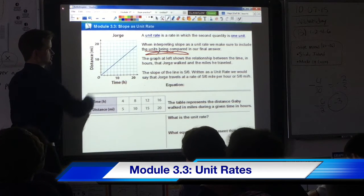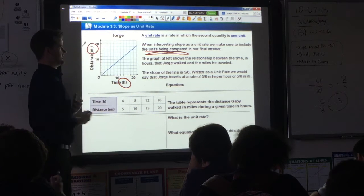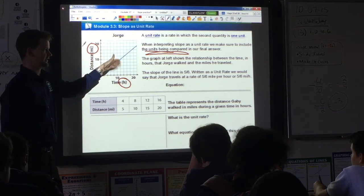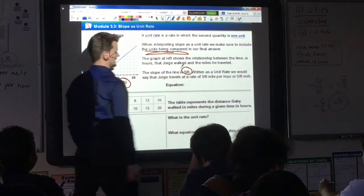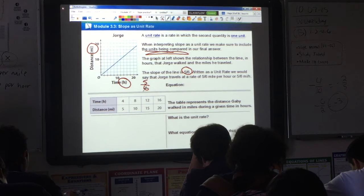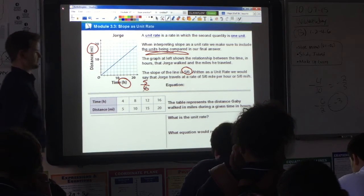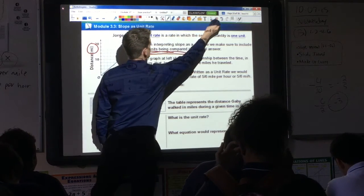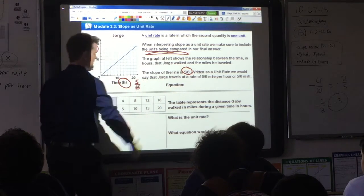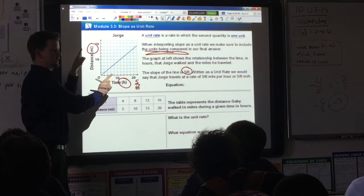This graph right here shows the relationship between the time in hours that George walked and the miles that he traveled. If we were to calculate the slope of this line, the slope would be 5/6, or 5 over 6. What that means is he's traveling 5 miles in 6 hours. The only difference between finding the slope and writing it as a unit rate is, so far the slope is just 5/6. As a unit rate, we're just going to write two quantities being compared.